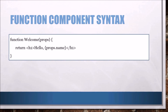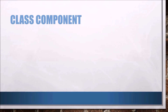Function component syntax: as mentioned, this syntax is a pure JavaScript function. The function can accept only one parameter and that parameter is props — that is, properties. Here we can't use state and lifecycle methods, so there is no render method. We directly return only JSX syntax.